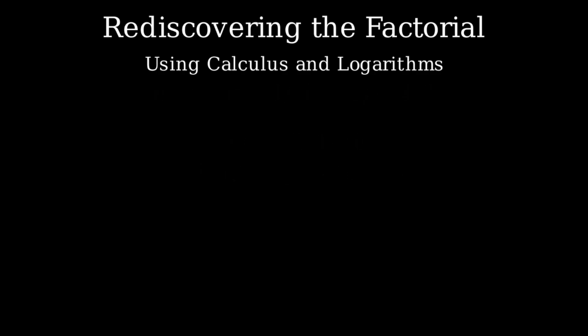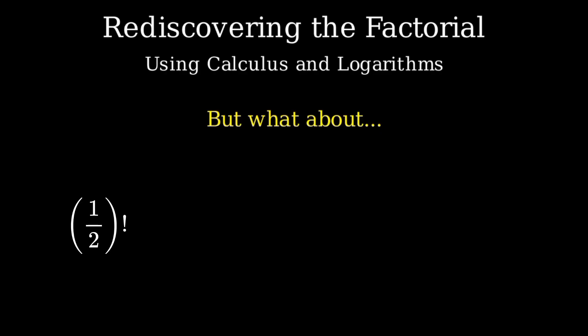But here's an interesting question. What happens if we ask: what is 1 half factorial? Or what about pi factorial? Or even 2.7 factorial? These questions don't make sense with the standard definition. How do you multiply from 1 to 1 half? It's not obvious at all.